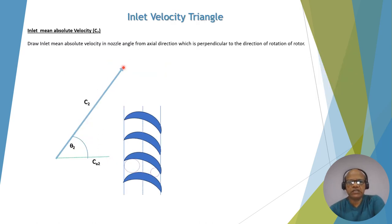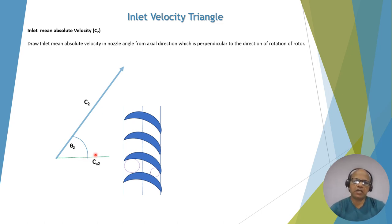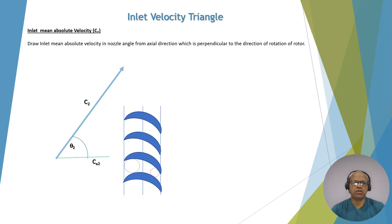Now let's draw the inlet velocity triangle. This is the inlet mean absolute velocity C2, which is drawn at an angle theta 2 from the axial direction. The axial direction refers to the axis of the rotor. The absolute velocity C2 makes angle theta 2 with reference to the axial direction, which is equal to the nozzle outlet angle or fixed blade outlet angle.